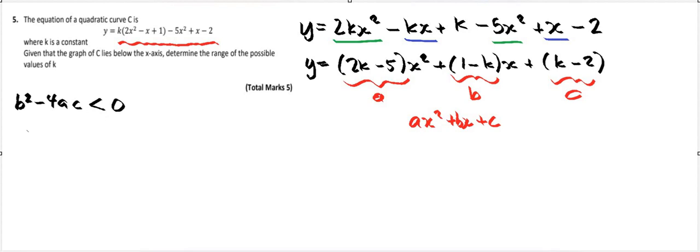So now let's input my a, b, and c. So I've got 1 minus k squared minus 4 times a, which is 2k minus 5, times c, which is k minus 2. All of that has to be less than zero. So let's expand the first bracket.